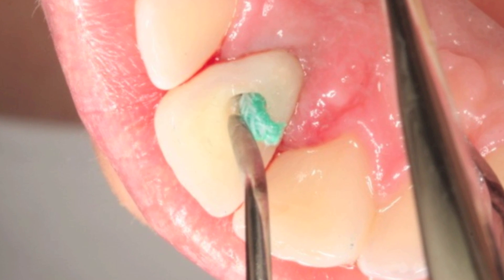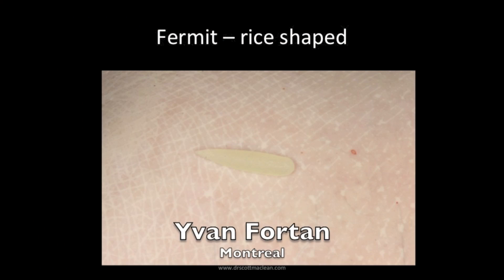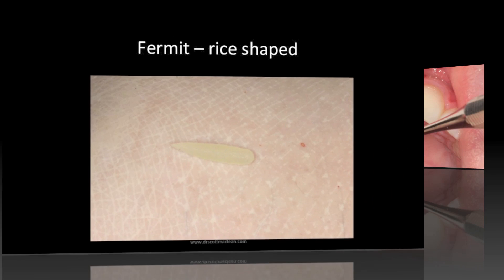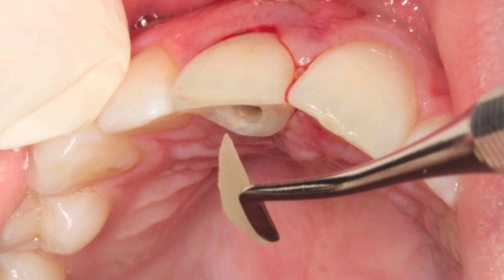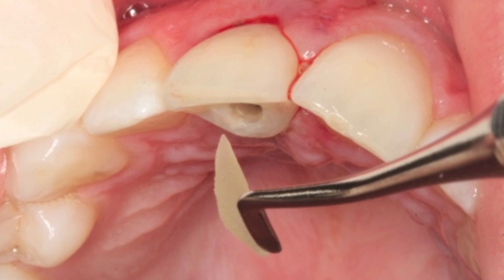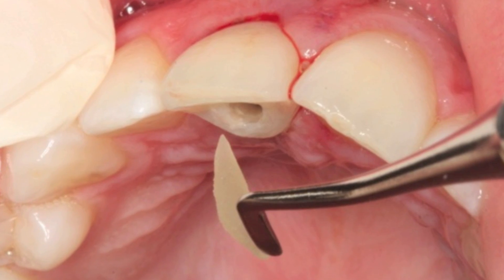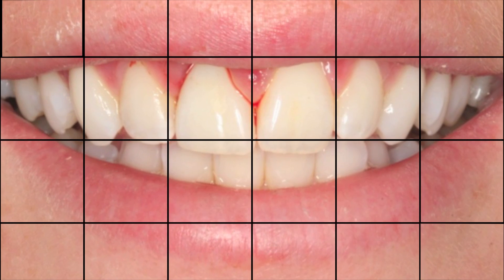This tip is from my Canadian friend Yvon Fortin. He says to roll a little bit of ferment into a rice shape on the back of your glove, and you can carry it to the mouth — this makes it easy to go down the access channel. Once you place your cord, you can go back in and place this little piece of ferment to seal the area off so bacteria can't go down there.